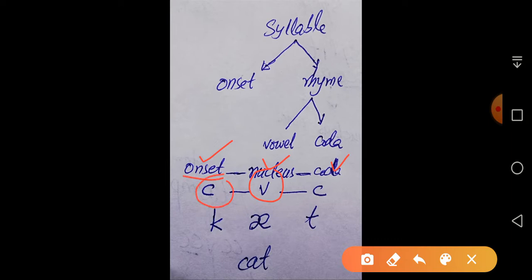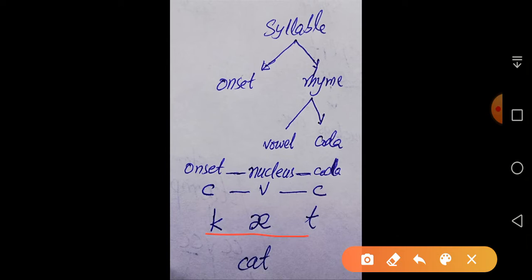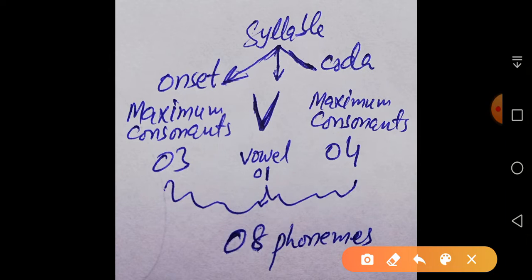Nucleus means a vowel; onset means consonants coming before the nucleus; and coda means consonants coming after the nucleus. For example, the word 'cat' is transcribed as /k/, /æ/, /t/ — three phonemes or three sounds. The /k/ is known as onset, /æ/ is known as nucleus, and /t/ is known as coda. So in the structure of a syllable, one phoneme must be a vowel — the central phoneme — and consonants are attached to this vowel.